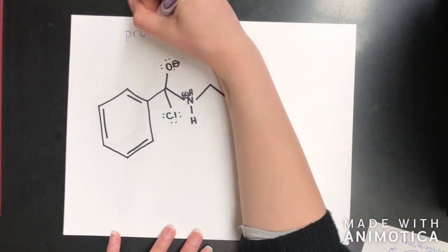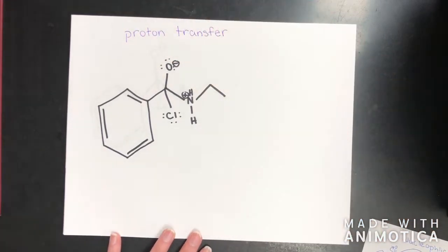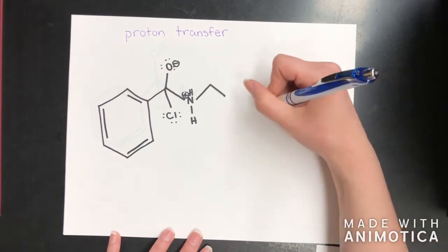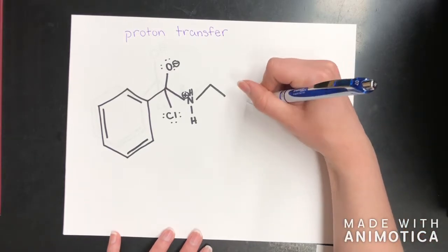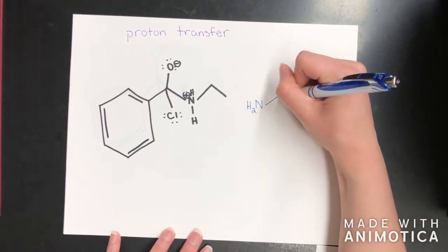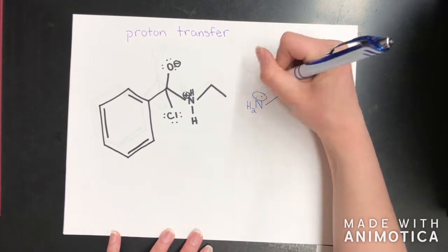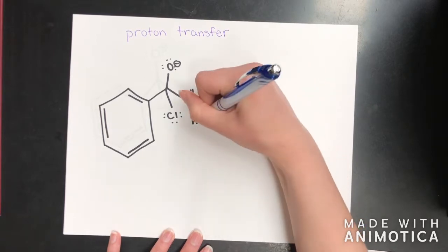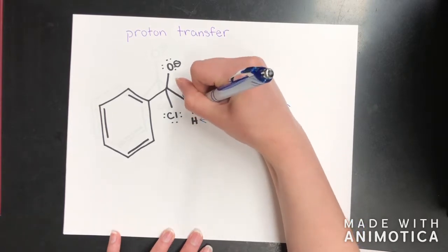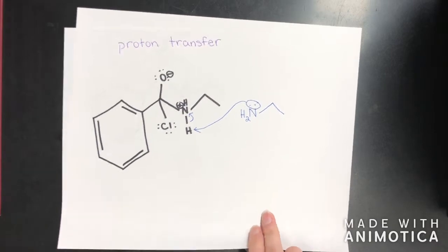The next step is a proton transfer. In this step, ethanamine is going to come back and the lone pair on the nitrogen is going to attack again. This time, the lone pair is going to attack the hydrogen and take it, and then break that bond, leaving a lone pair on the nitrogen, which will make that species neutral.